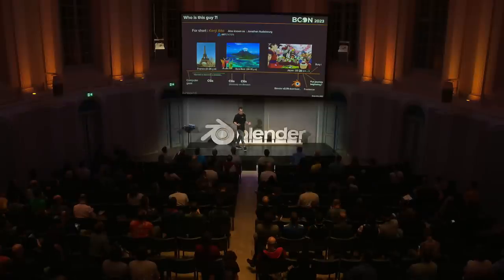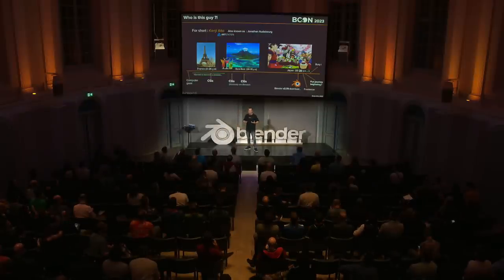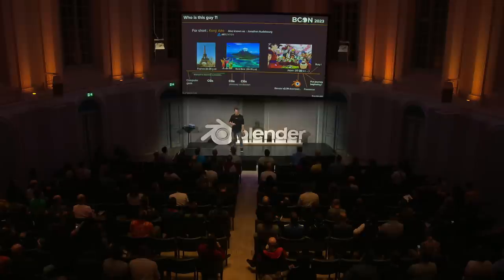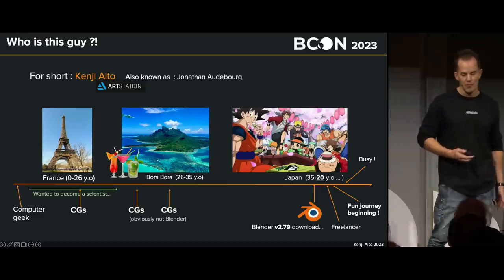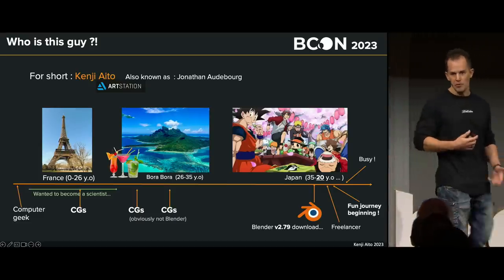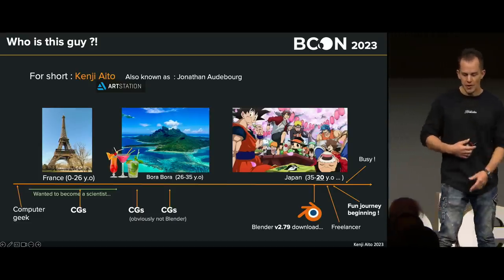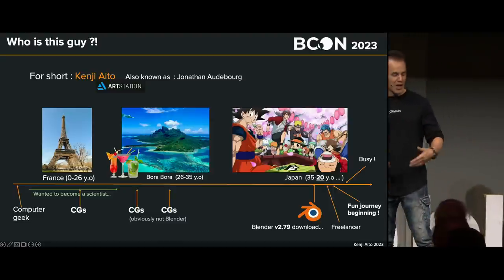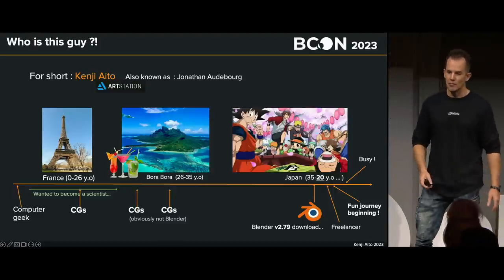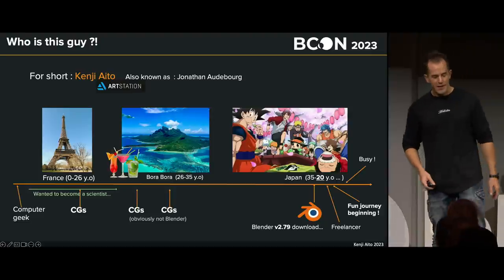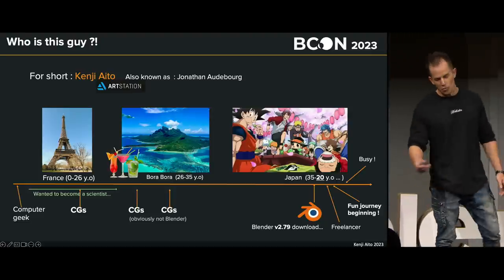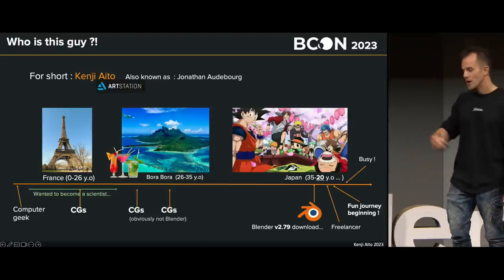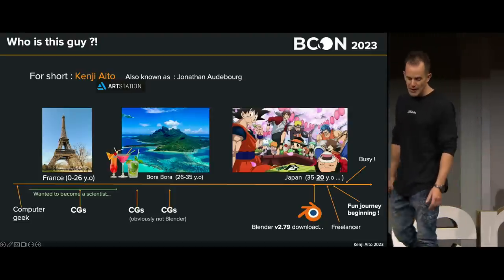Introducing myself briefly: you can call me Kenji Aito, that's how you can find me on ArtStation. But actually my real name is Jonathan de Bosso, I'm a Frenchman — maybe you figured that one out already. This is a graphical representation of my life: from France to a small island called Bora Bora, to Japan — it's just a bigger island, you know.